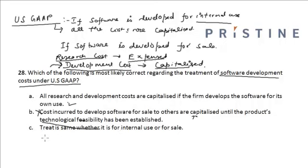The third option says that US GAAP gives the same treatment whether software is for internal use or for resale. This option is incorrect because if it is for internal use then all costs are capitalized, whereas if it is for outside sale then research costs — costs until technological feasibility is established — are expensed, and costs after that point are capitalized. Hence option A is correct.